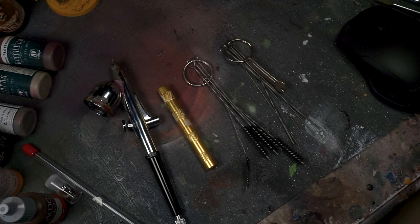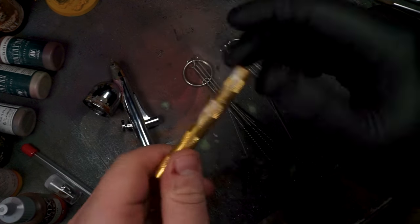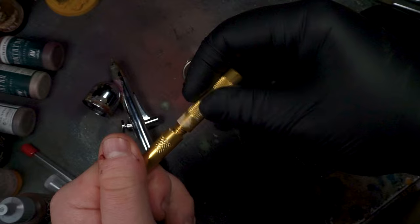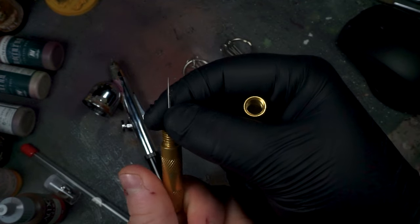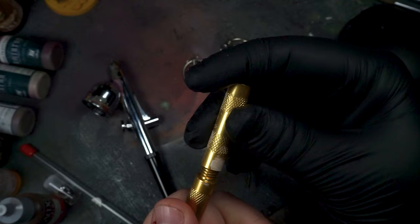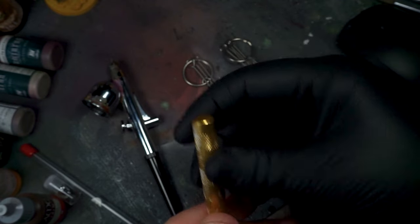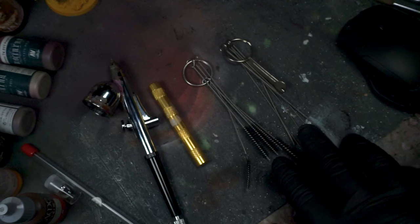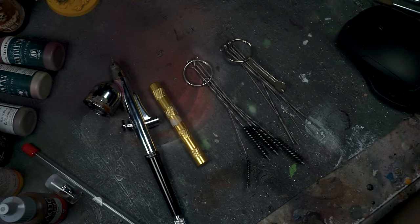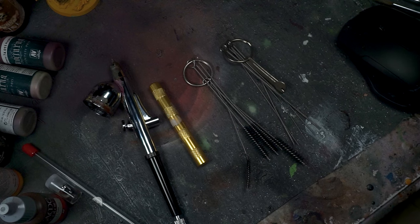What you're going to need is of course your airbrush, this tool here which is a nozzle cleaner - it simply just unscrews and is a very fine pointed pin for cleaning out the nozzle. Then we've got these two pipe cleaner looking doohickeys. These are all available on Amazon very cheap, a couple of quid at best, and these will be for cleaning out the body of the airbrush.